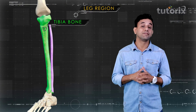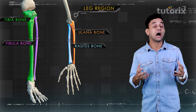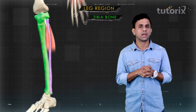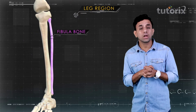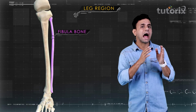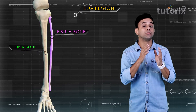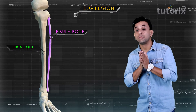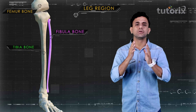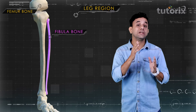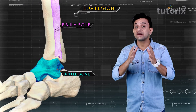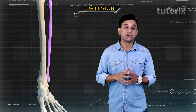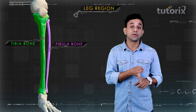The tibia and fibula, like the radius and ulna, are connected to each other by an interosseous membrane. The fibula bone is parallel and lateral to the tibia and is smaller in comparison. Unlike the tibia, the fibula is not attached to the femur, but it does stabilize the ankle joint.